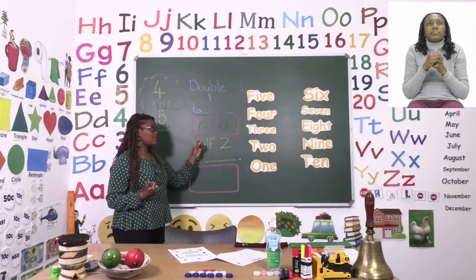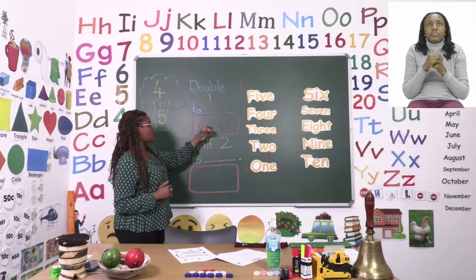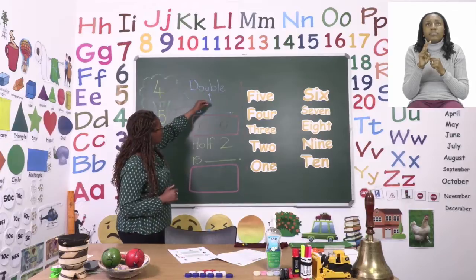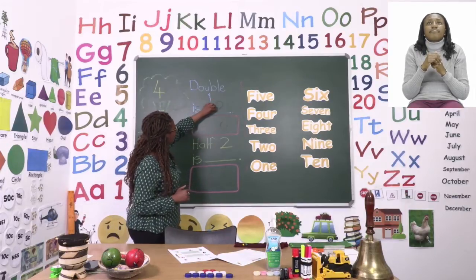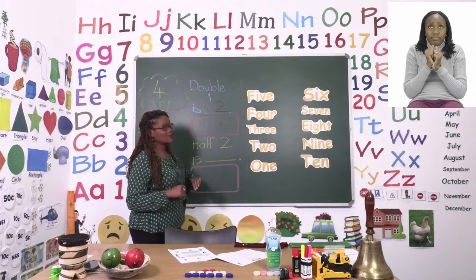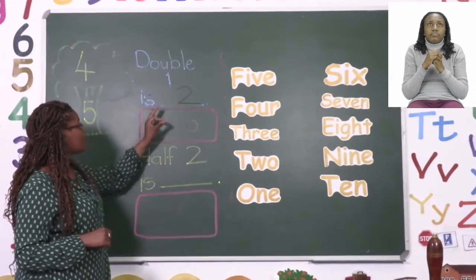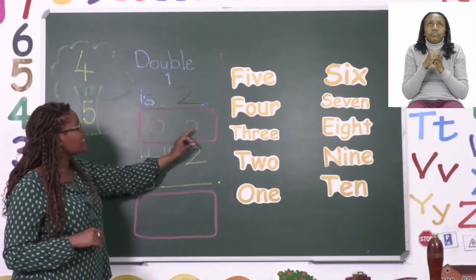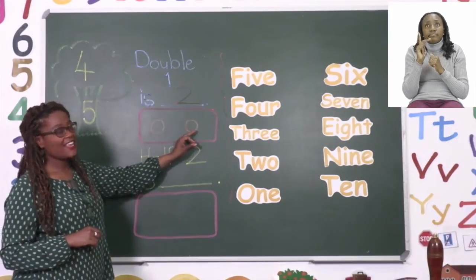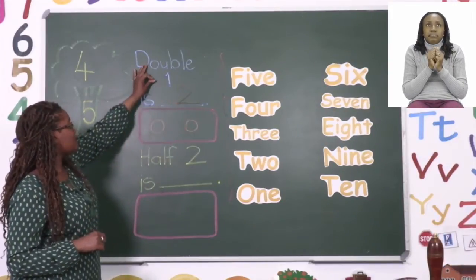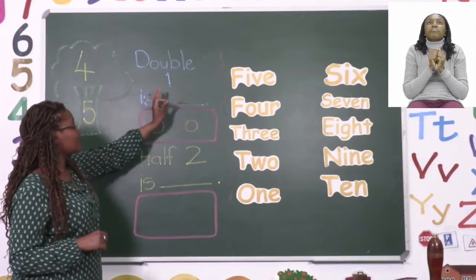For us to get our answer we need to count them. One, two. So our answer after doubling is two. So don't forget first you draw the number you've been given and then after that you do it again. Then you will get your answer. Double one is two.